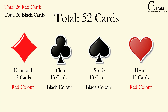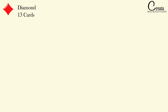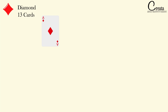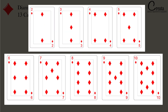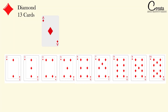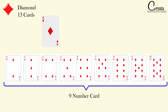Moving further, if we talk about the individual 13 cards — these 13 cards are similar in all 4 sets. Let's discuss what these 13 cards are. In these 13 cards, the first card is known as Ace. After that, there are total 9 number cards. The cards range from number 2 to number 10. So among these 13 cards, there are total 9 number cards, that is from number 2 to number 10.